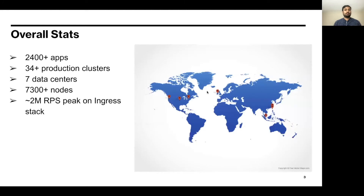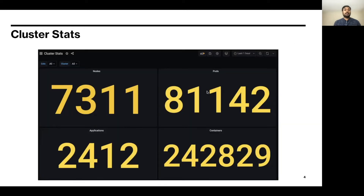Let's get started by taking a look at Kubernetes scale at Yahoo. Overall, we have 2,400 plus applications in 34 production clusters across cloud data centers. Our ingress stack handles 2,000,000 peak RPS. This is the screenshot from our monitoring dashboard, showing the number of nodes, pods, and applications that we run across the board.